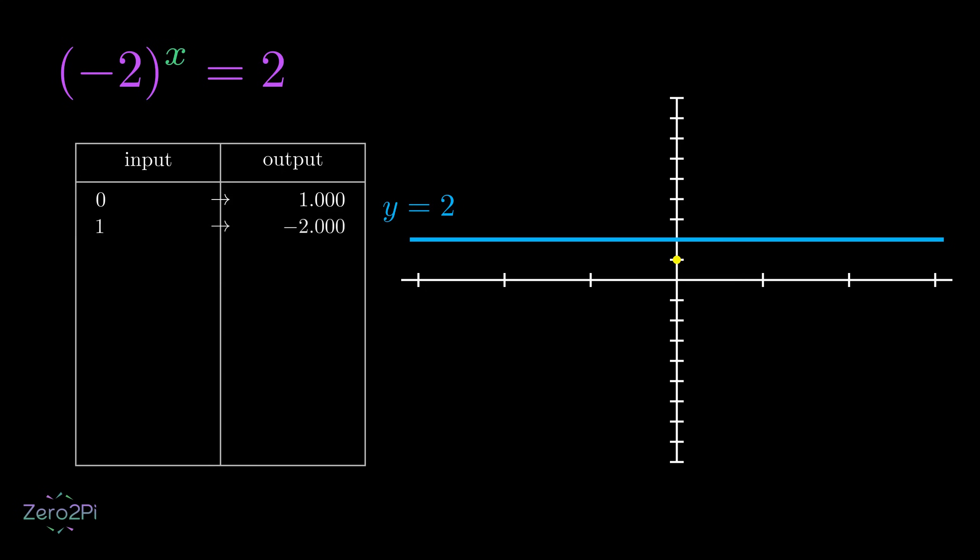If x equals 1, negative 2 to the 1st power is negative 2, not 2. If x equals 2, negative 2 squared is 4, still not 2. I'm adding point after point to this graph and none of them are hitting our target line at y equals 2.